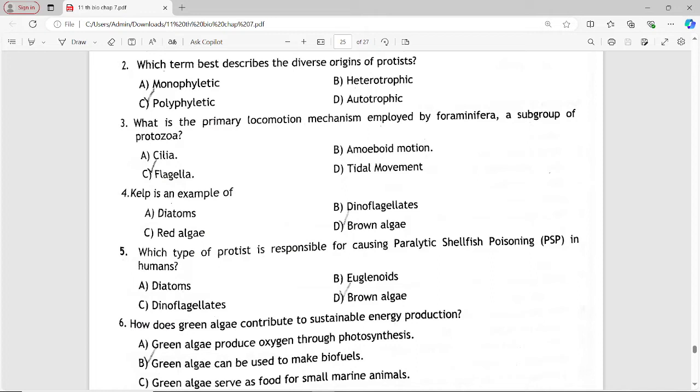Next MCQ: Kelp is an example of? Options are: diatoms, dinoflagellates, red algae, brown algae. Answer is option D: brown algae.